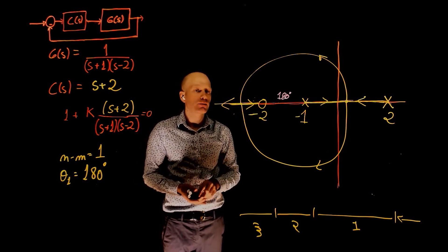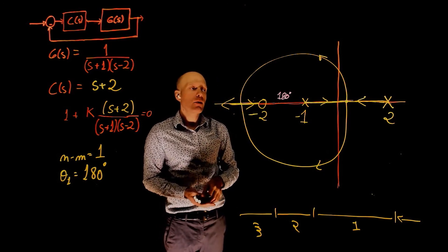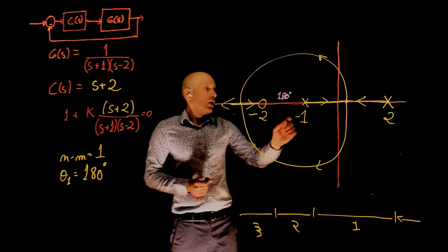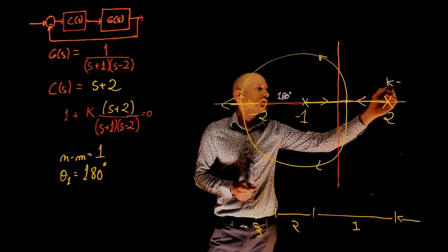Now is this system stable? Well, it depends on the value of K. The system may be stable or not. Up to this point here, if we call this value of K, say K here is zero.